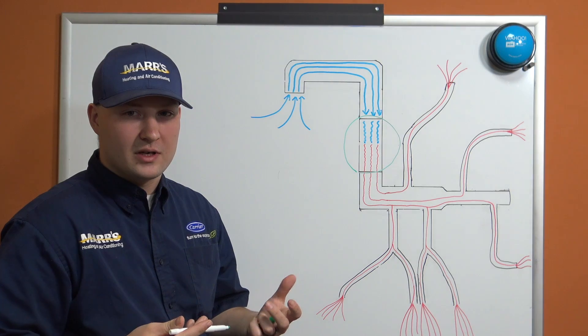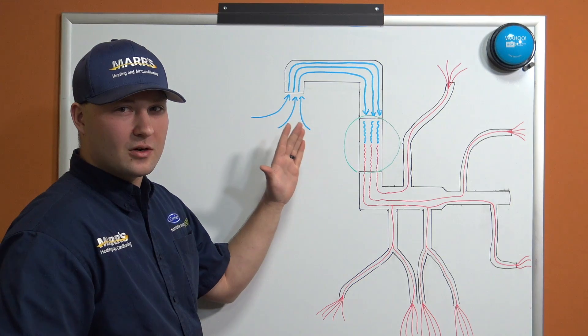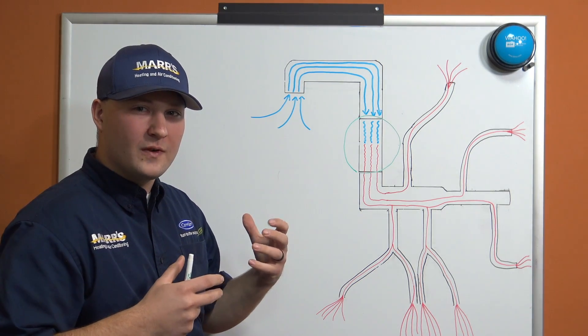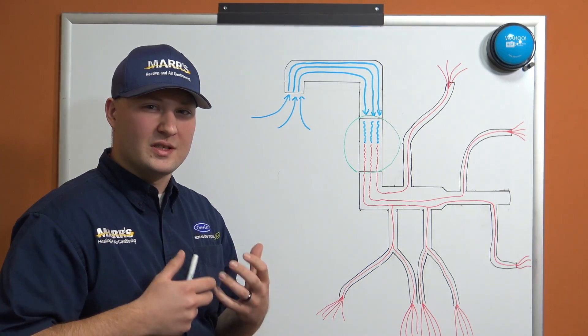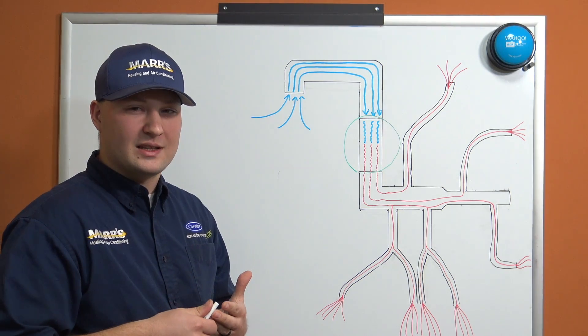Basically, when we're really restricted on our duct system, when we can't move the amount of air that this system is designed to move, we end up hurting the mechanical components inside that system, such as blower motors or, in the outdoor unit's case, a compressor.